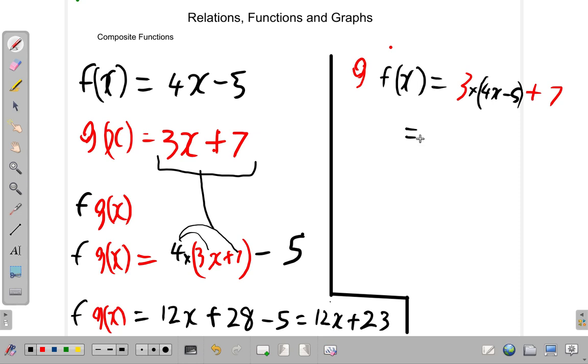So what we have is going to be 3 times 4 gives you 12x, minus 3 times 5 is 15, plus 7. And that is 12x minus 15 plus 7, which is going to be negative 8.